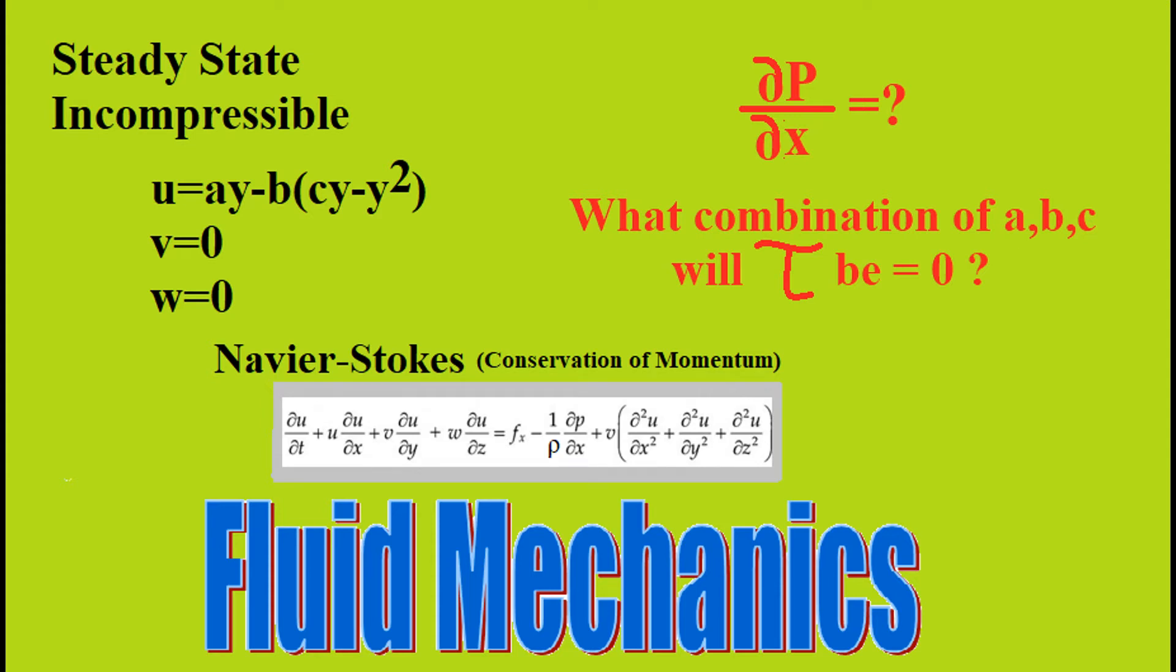Let's solve this fluid mechanics problem. We are dealing with a certain viscous incompressible flow field with zero body forces, and the velocity components are given as U equals AY minus B times in parentheses CY minus Y squared. The V component zero, W component is zero.